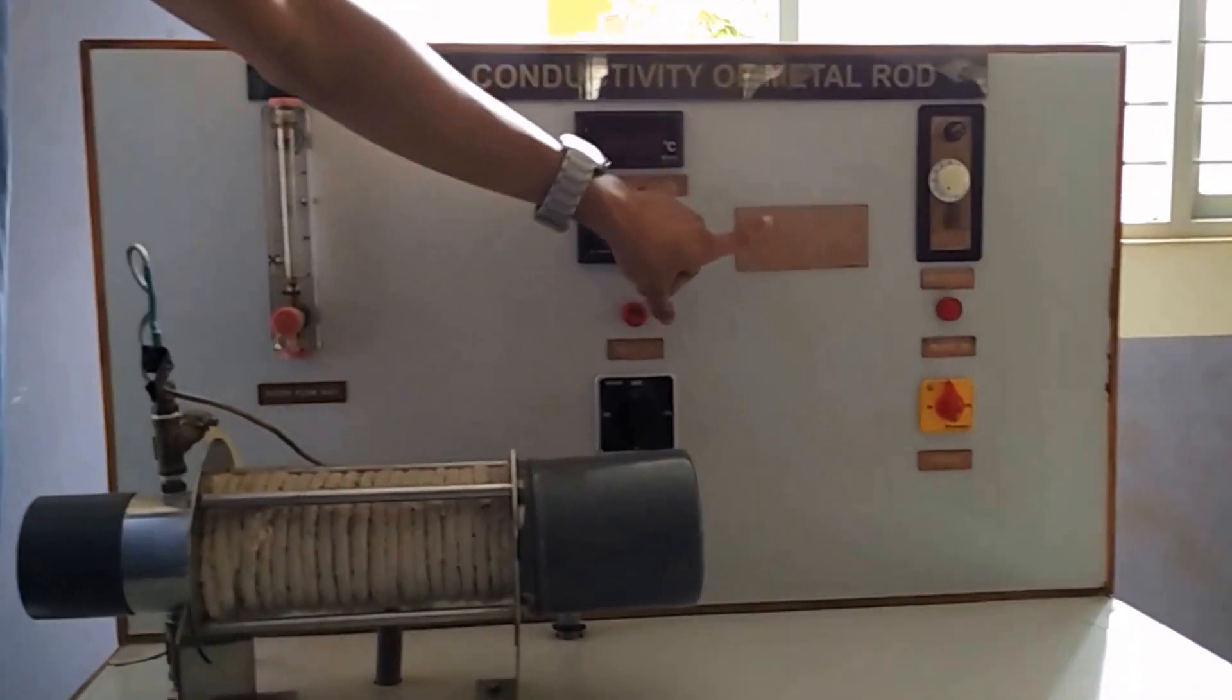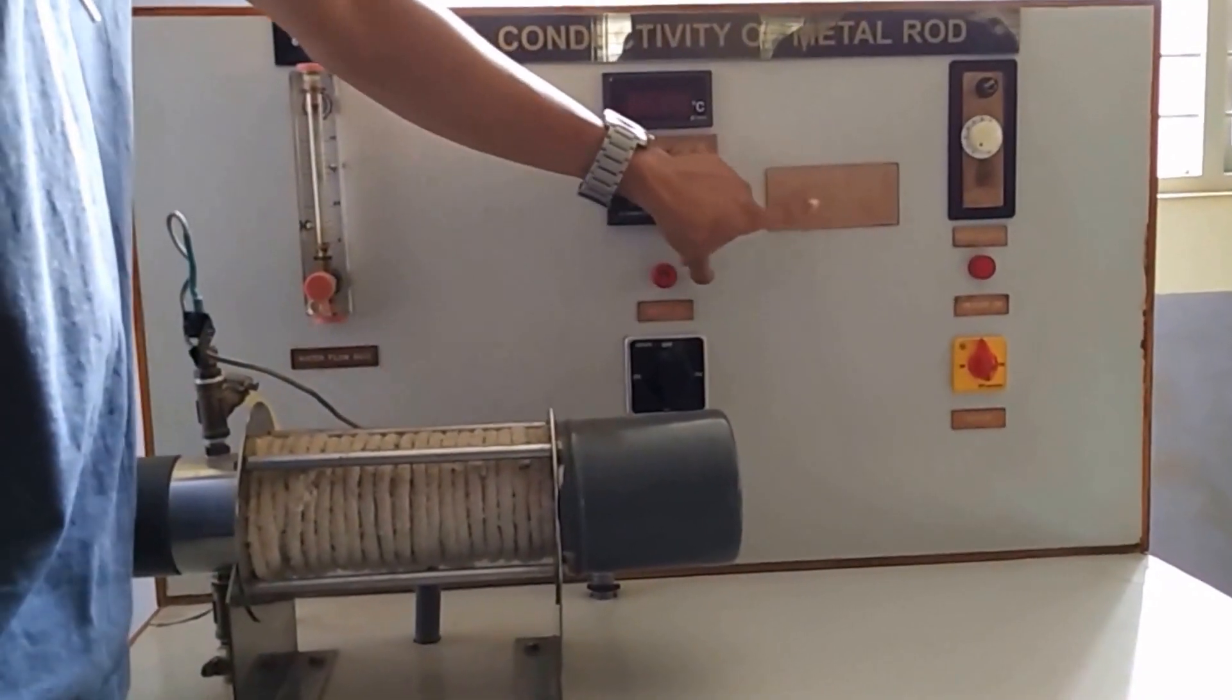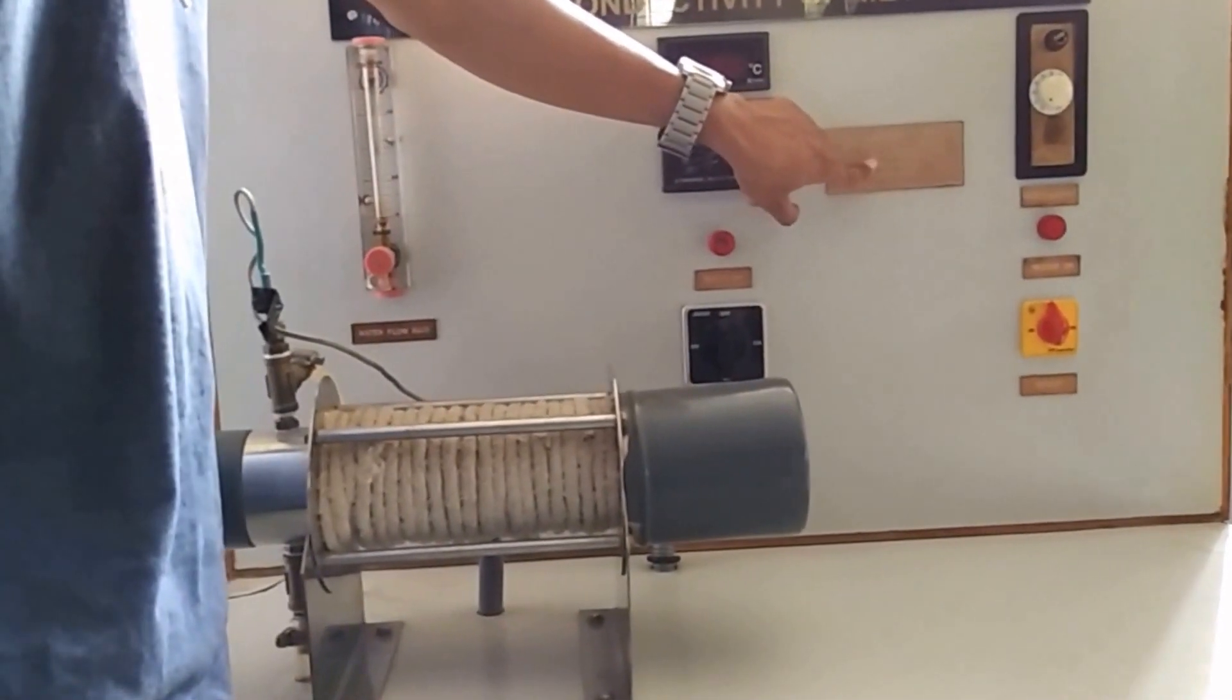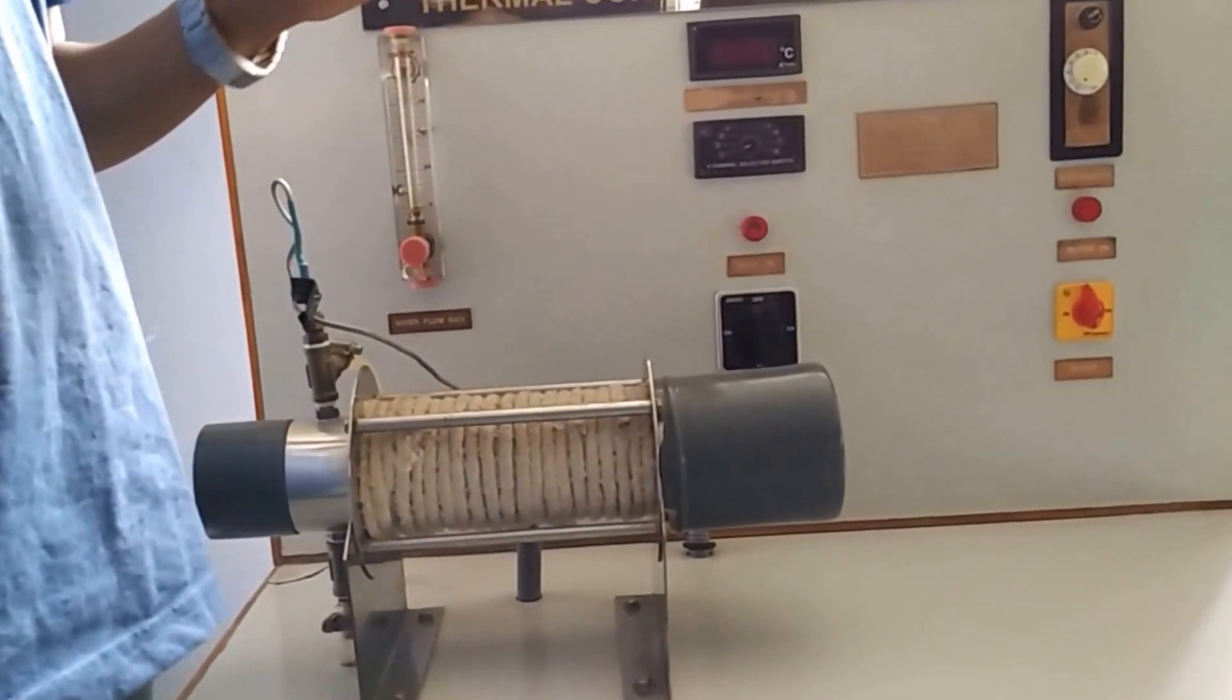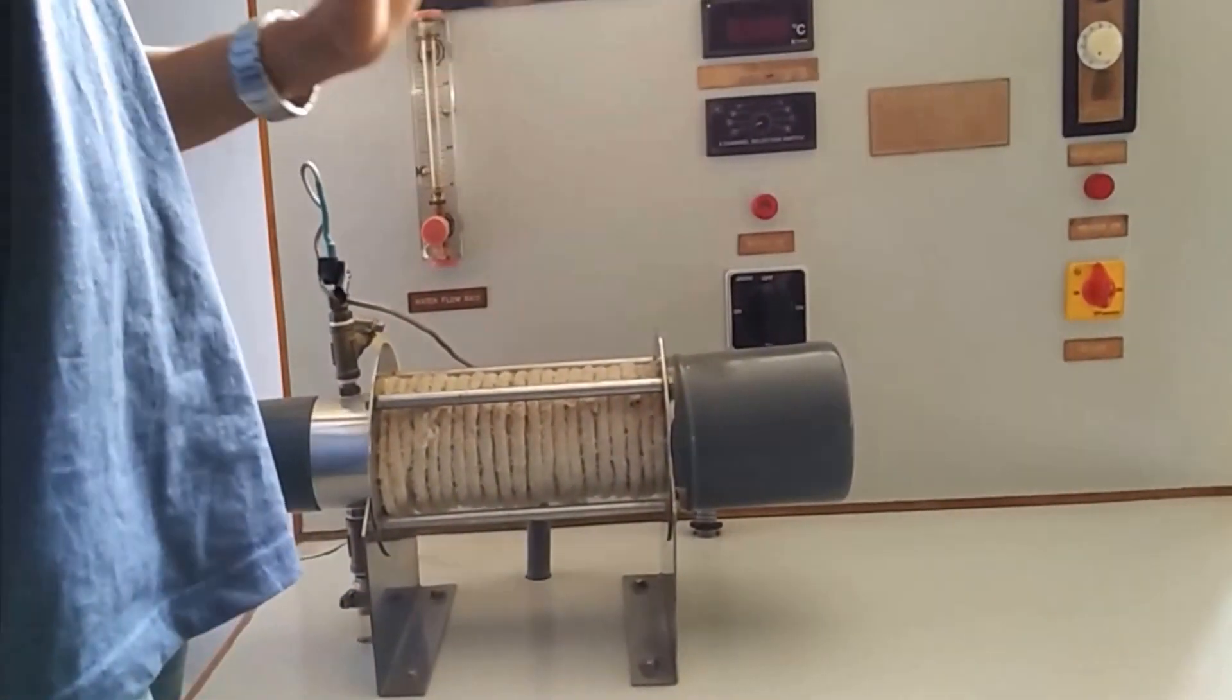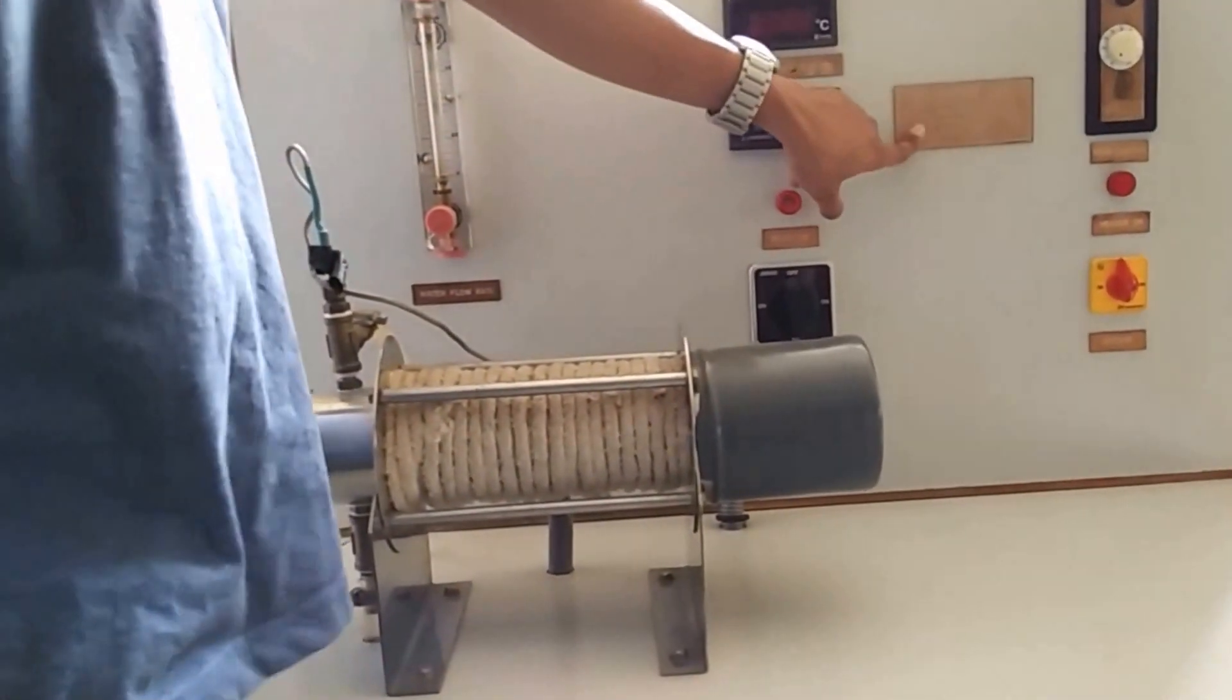While taking readings, we note down all the values: T1, T2, T3, T4, T5, and T6. After noting all temperatures, we check for steady state condition. For every 5 to 10 minutes we take readings and check for steady state. If steady state is achieved, we stop.